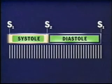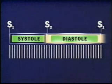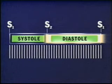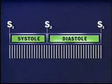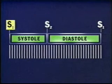Ventricular systole occurs between S1 and S2. Ventricular diastole occurs between S2 and the next S1. Because diastole usually lasts longer than systole, you can identify the two sounds: one two, one two.